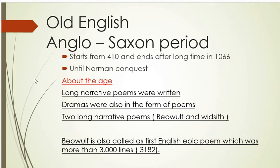Old English, which is called the Anglo-Saxon period, starts from around 410 AD and ends in 1066 with the Norman Conquest. This whole period from 410 to 1066 is the Old English period. In this age, long narrative poems were written — that is an important point you need to remember.